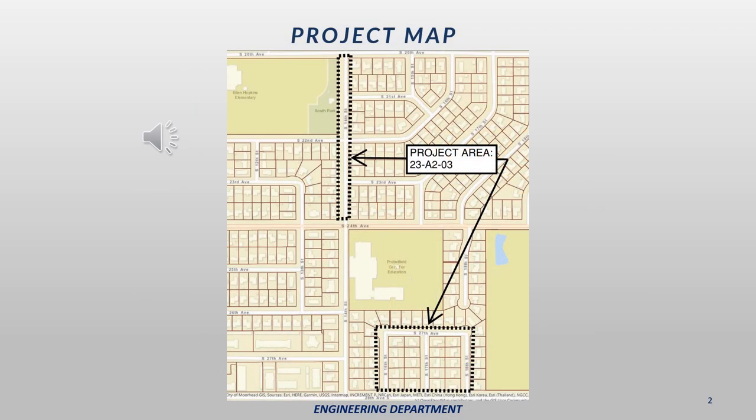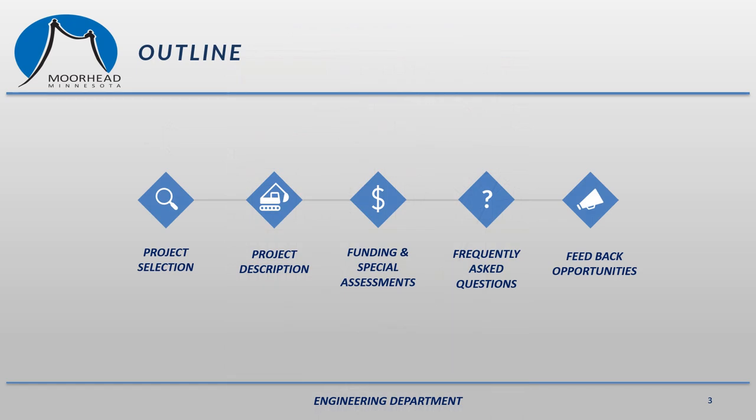This is a vicinity map for the project area and shows the rough limits of construction. The project area includes 14th Street from 20th Avenue South to 24th Avenue South, and 16th, 17th, and 18th Street from 27th Avenue to 28th Avenue South. In this presentation, we'll go over a brief explanation of how the city selects its project areas, how we decide which streets to do, and the different types of work we can do. I'll also explain the type of work we are proposing to do in your neighborhood. We'll also go over funding and special assessments, as well as some frequently asked questions, and an opportunity for residents to provide feedback.